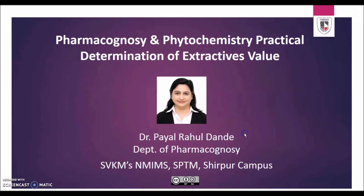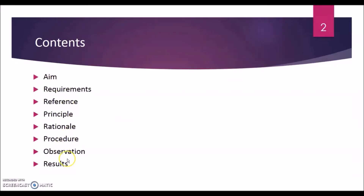As we see the contents that are there in our practical — usually those which are mentioned in the journal — we start with writing an aim, then talking about the requirements and the reference from where we are going to follow the procedure, the principle or rationale behind doing this particular practical, and we will also see the observations and results. I have also added a demo video of the whole procedure in this PowerPoint.